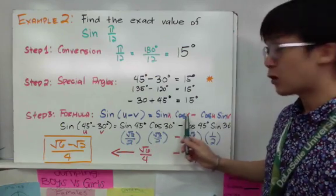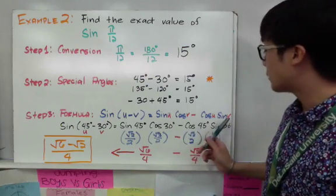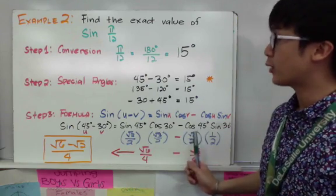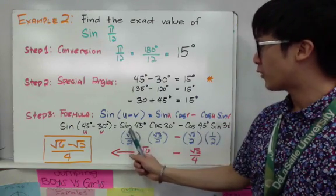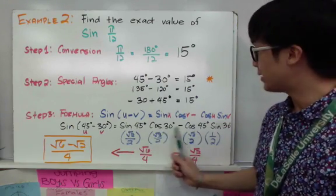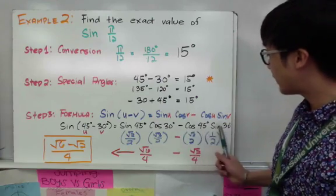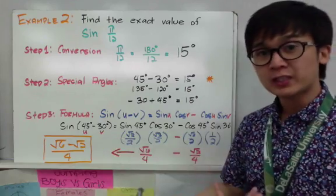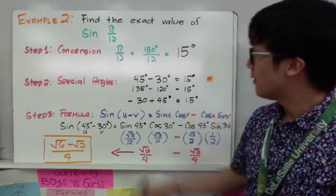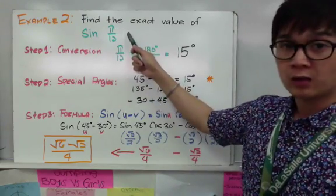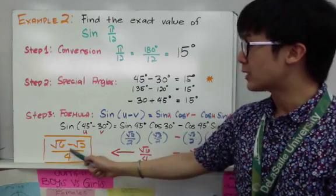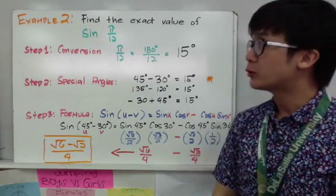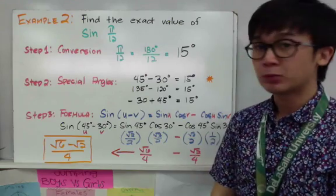Using the formula sine(u − v) = sine u cosine v minus cosine u sine v, with u = 45° and v = 30°, we get: sine 45° cosine 30° minus cosine 45° sine 30°. Just as in the previous example, we substitute unit circle values, multiply, and combine the fractions. Therefore, sine(pi over 12) equals square root of 6 minus square root of 2, all over 4.